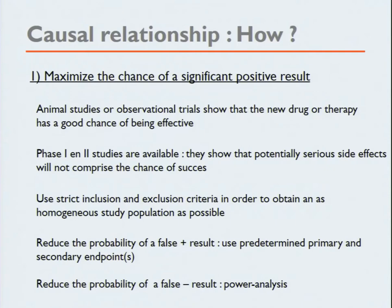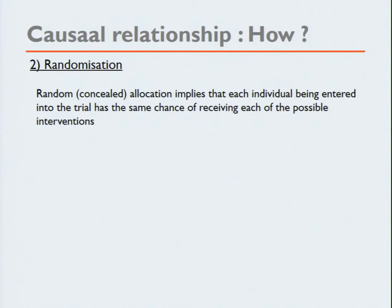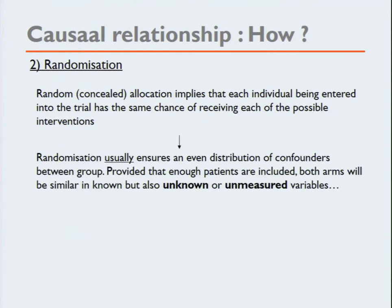Then they randomize. Randomization means each individual entered into the trial has the same chance of receiving each of the possible interventions. Randomization is very important: it usually ensures an even distribution of confounders between groups, and provided that enough patients are included, both arms will be similar in known but also unknown or unmeasured variables. This is very important.